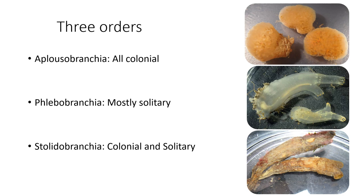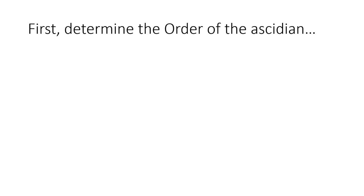On the top right, we have an example of an Aplusobranch colony — you might be able to see the individual zoids, all genetically identical to each other. In the middle, we have a Ciona, an example of a solitary Phlebobranch. On the bottom, we have Styela, an example of a solitary Stolidobranch. There are also many examples of colonial Stolidobranchs. The goal of this lecture is to help you understand which order of Ascidian you might be dealing with.